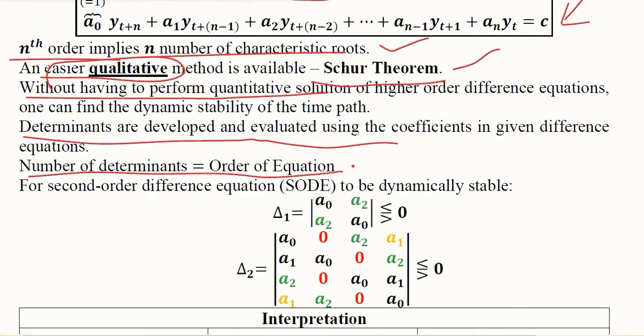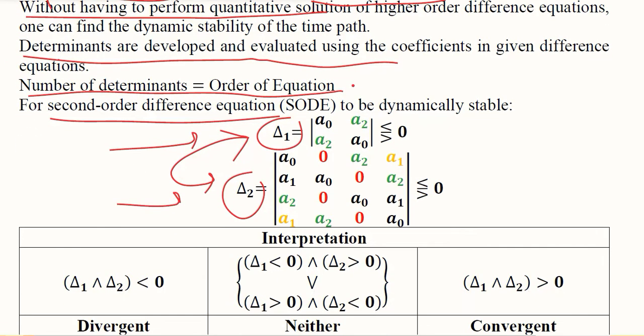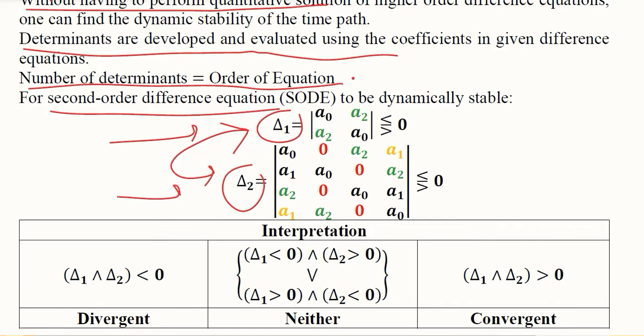For a second order difference equation we will have two determinants. The notation we use for these determinants are delta with subscript of the serial number: the first delta and the second delta. The formation is specific because in the principal diagonal we have a₀ and in the other two places we have a₂.